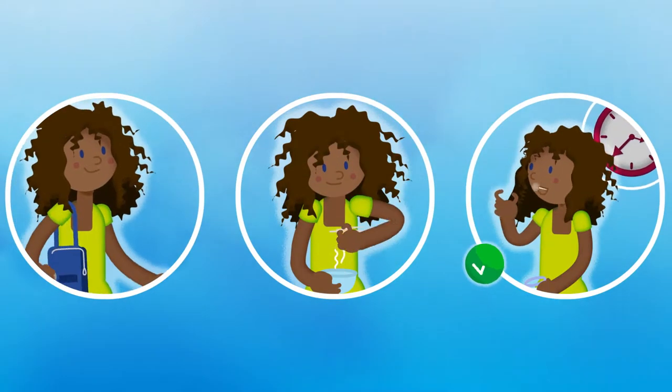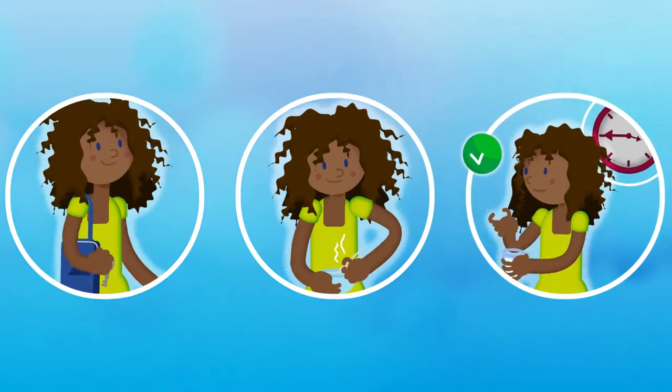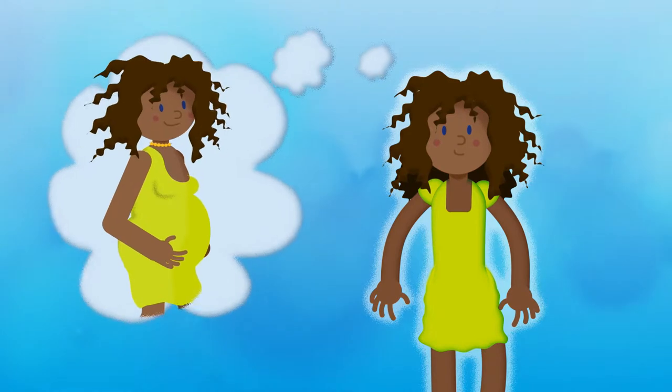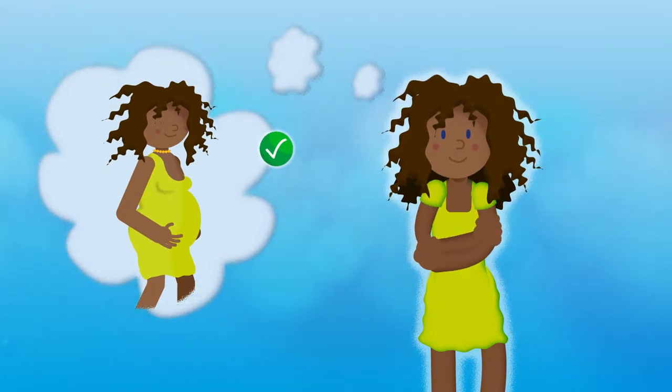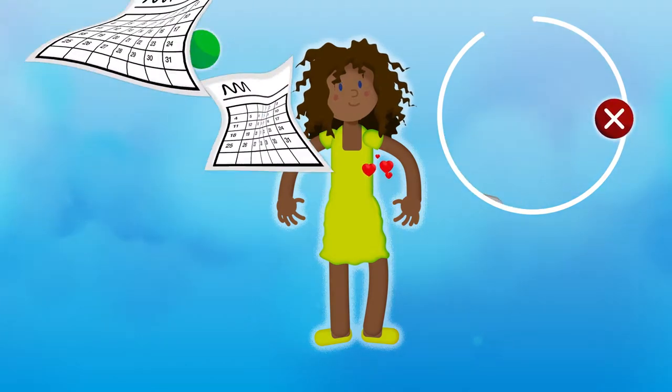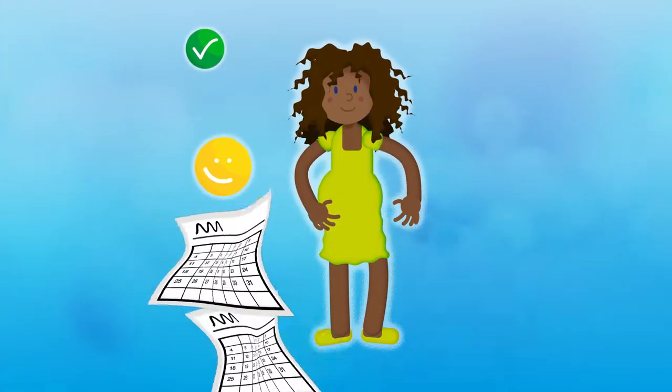Pills are great for women who have a regular routine and can remember to take something at the same time every day, and for women who want a child very soon as they're easy to start and stop. When you stop taking the pill you can get pregnant within a few months. It's that easy.